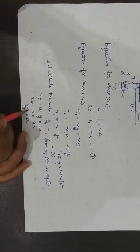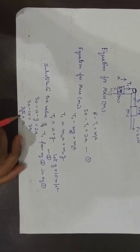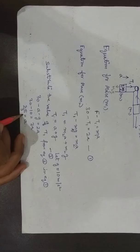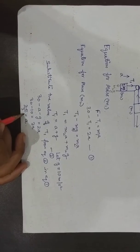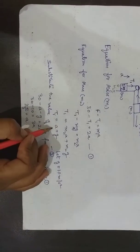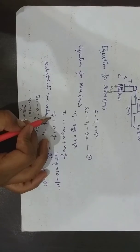From this I get A equals 20 by 3 meters per second squared. From this A, I substitute the value of A into equation number 2 to get the value of T1.